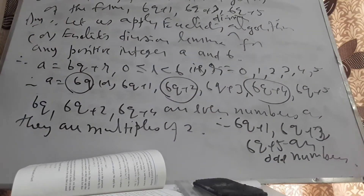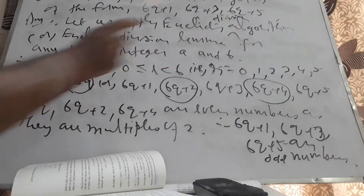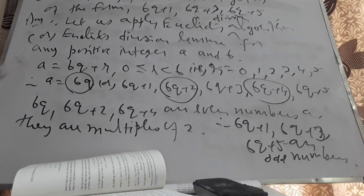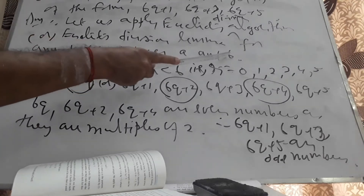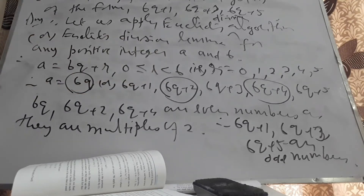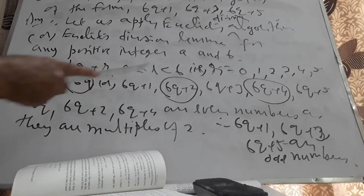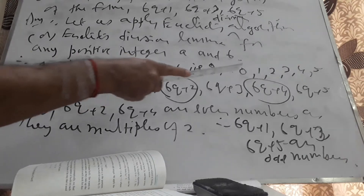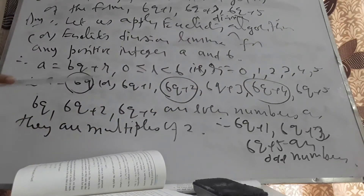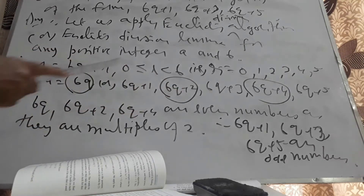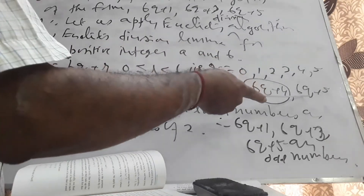Let us apply Euclid's division algorithm or Euclid's division lemma for any positive integer a and 6. Here a is the dividend, 6 is the divisor. Dividend equals divisor times quotient plus remainder, so a equals 6Q+R, where R is between 0 and 6 — 0 inclusive, 6 exclusive. R can be 0, 1, 2, 3, 4, or 5. When R=0 it is 6Q; R=1 gives 6Q+1; R=2 gives 6Q+2; R=3 gives 6Q+3; R=4 gives 6Q+4; R=5 gives 6Q+5.